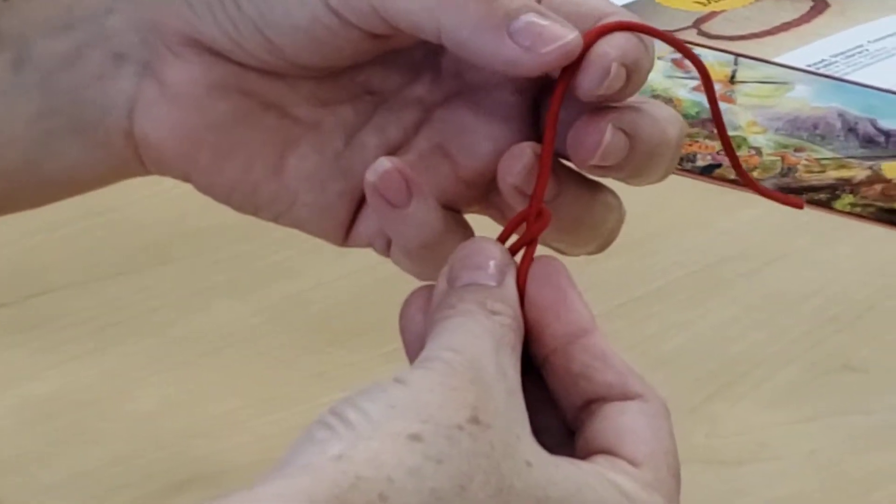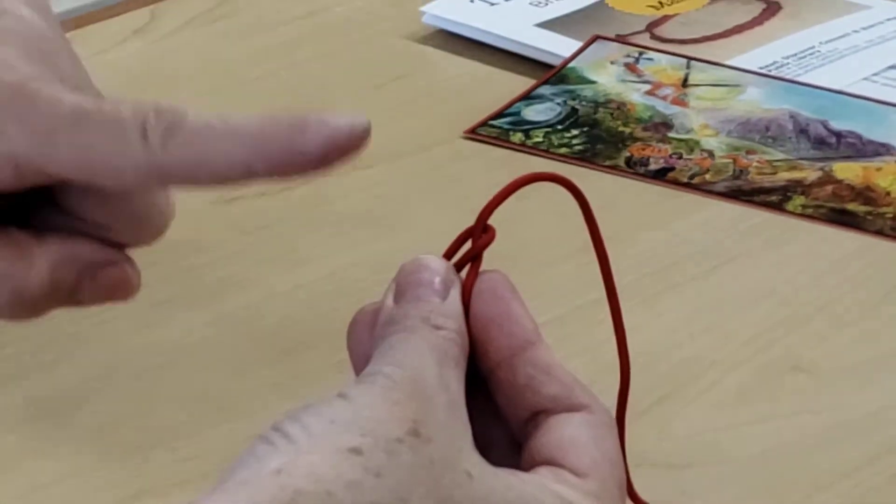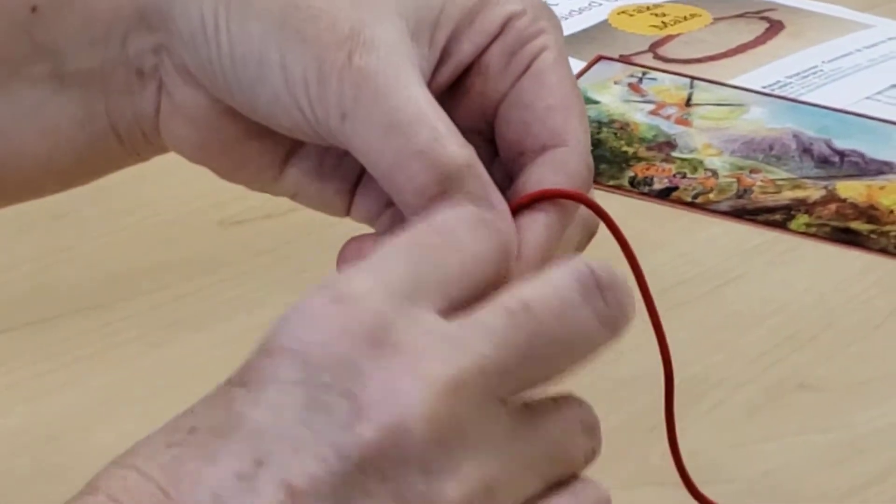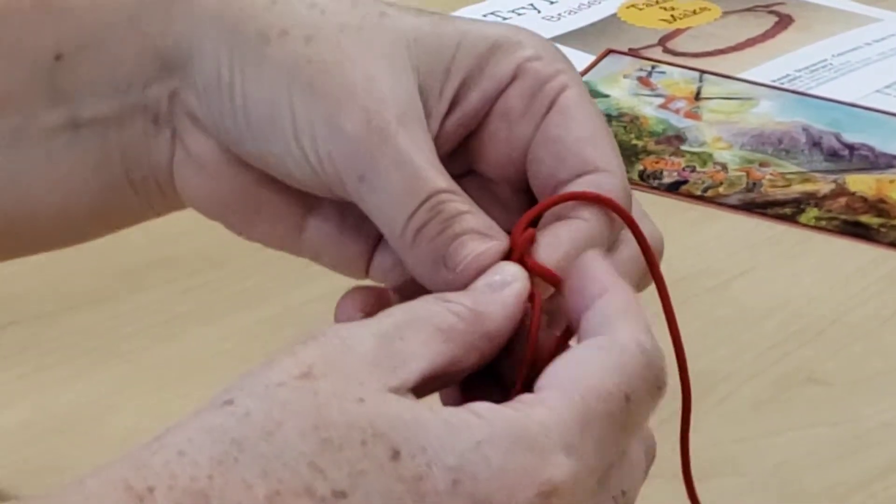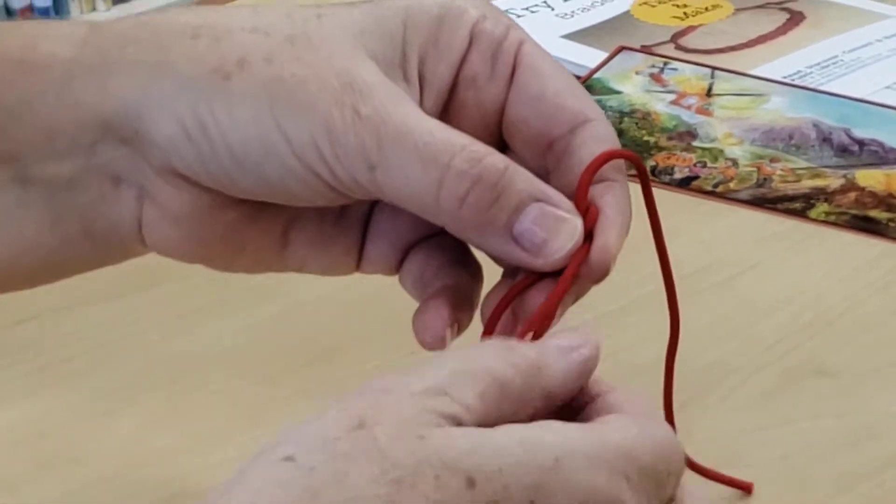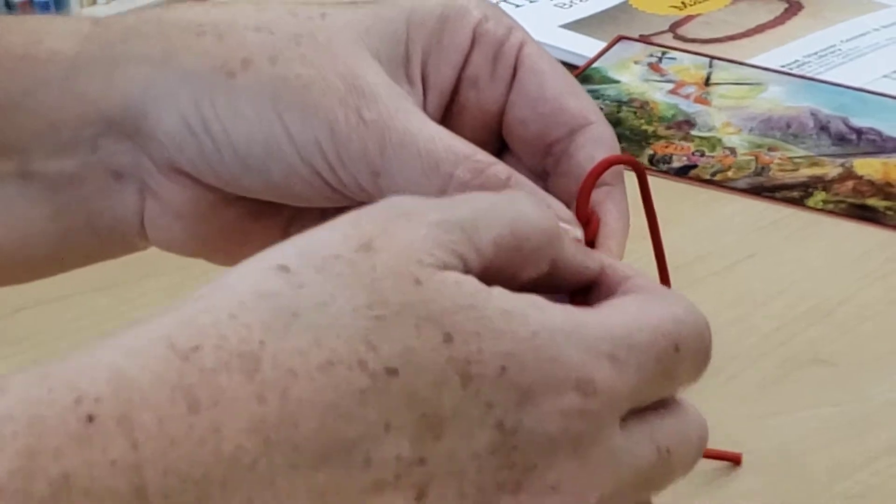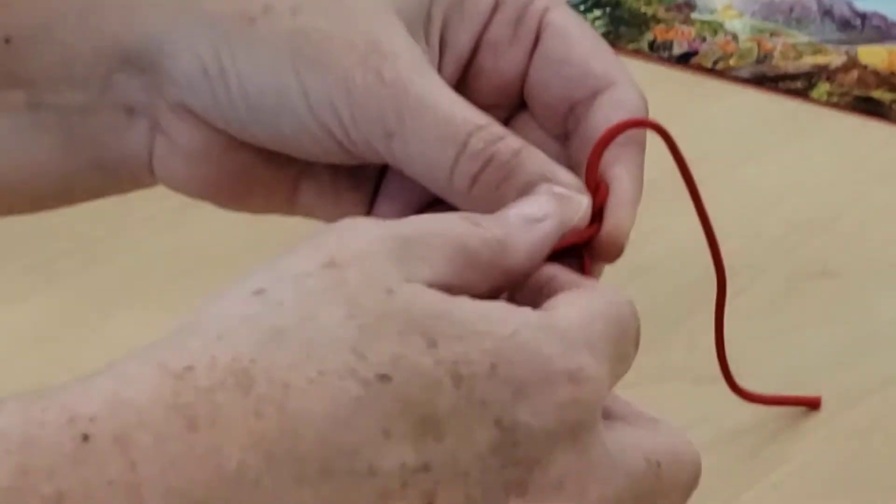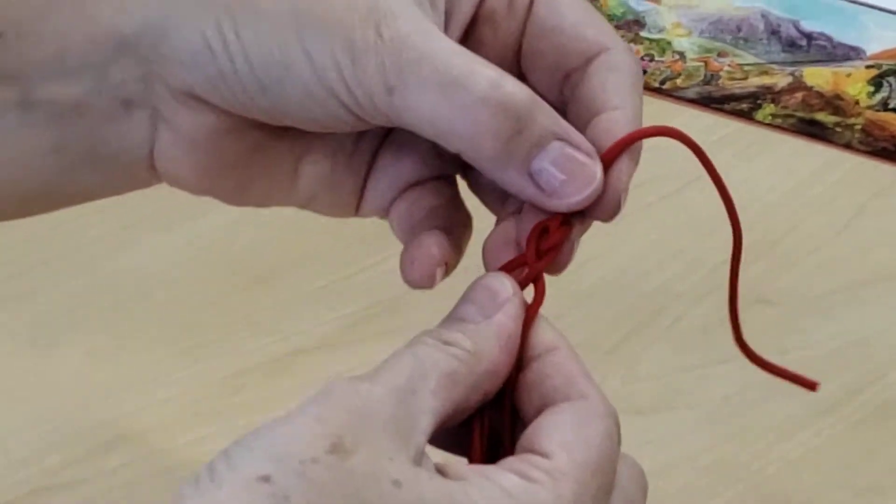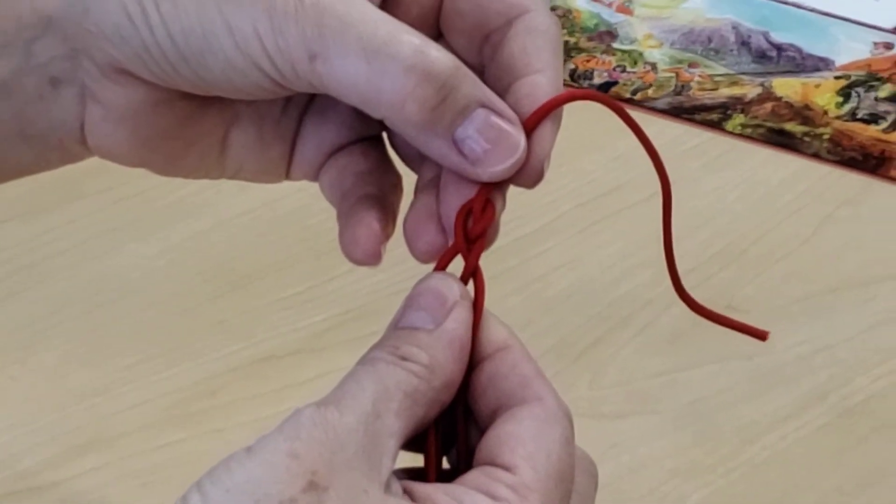I promise it'll be easier to see once I do it a couple times. Then we're gonna take the one that's on the far left and we're gonna go over the center. Okay, now we're gonna take the piece on the far right, go over and place it in the center, trying to show you what's happening under my thumb there.